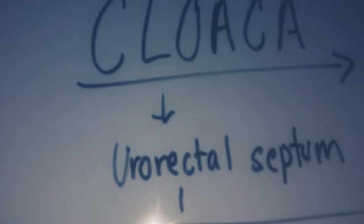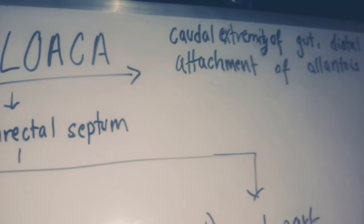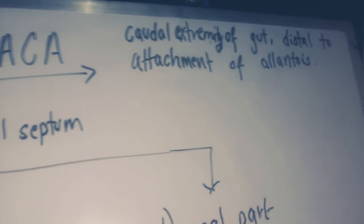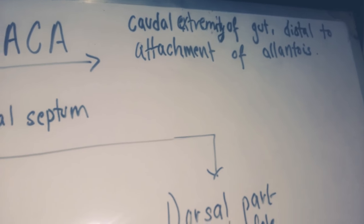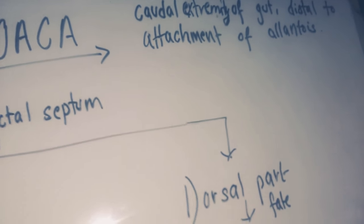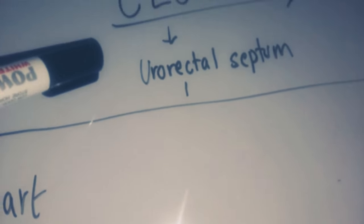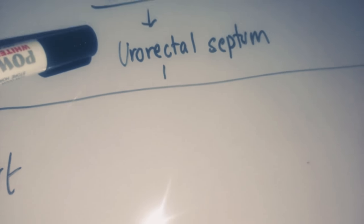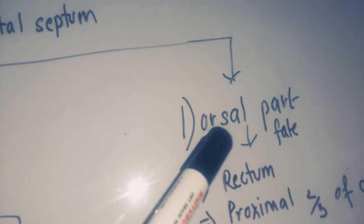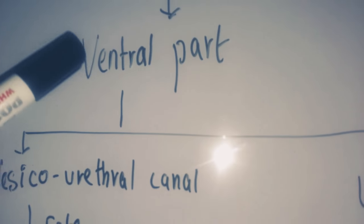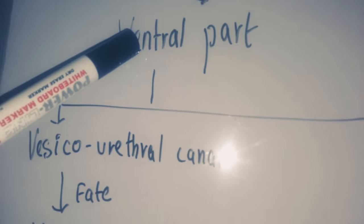This video is on the cloaca and its fate. Cloaca means the caudal extremity of the cord distal to the attachment of the allantois. The cloaca is divided by the urorectal septum into a ventral part and a dorsal part.